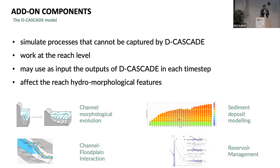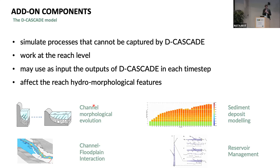In general, these add-on components may receive as input in each time step the data obtained from the cascade, such as sediment delivery, and then use this data to change the morphological and hydrological features of the reaches. For example, you can imagine a 2D component that changes the width or gradient of the channel according to sediment erosion or deposition.